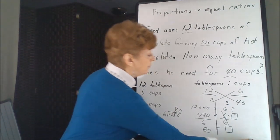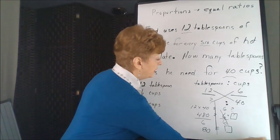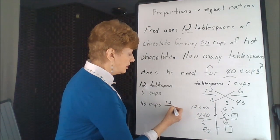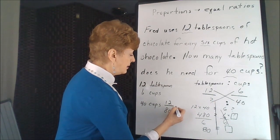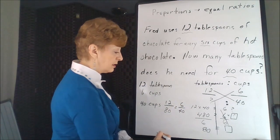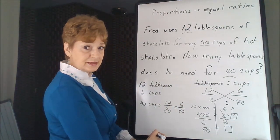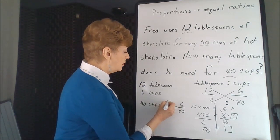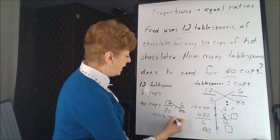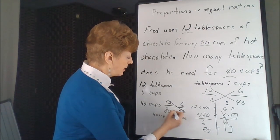Easy to check. We'll just put our 80 into this position. 12 over 80 is equal to 6 over 40. Let's cross-multiply this time and see if our proportion is equal. 40 times 12 is equal to 80 times 6.